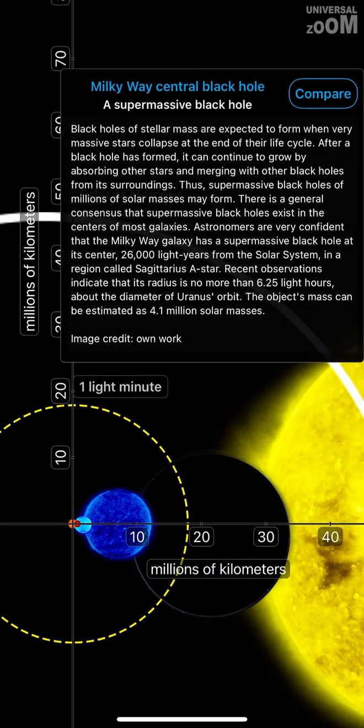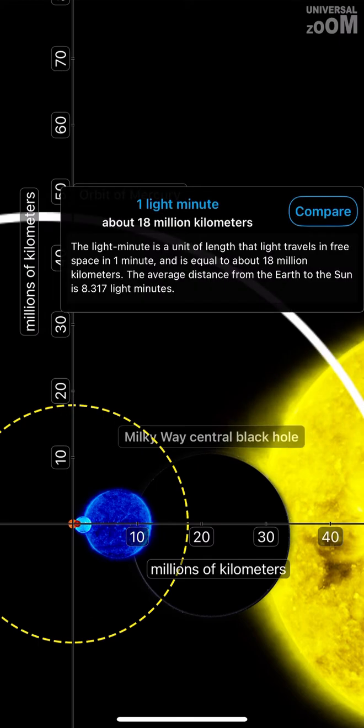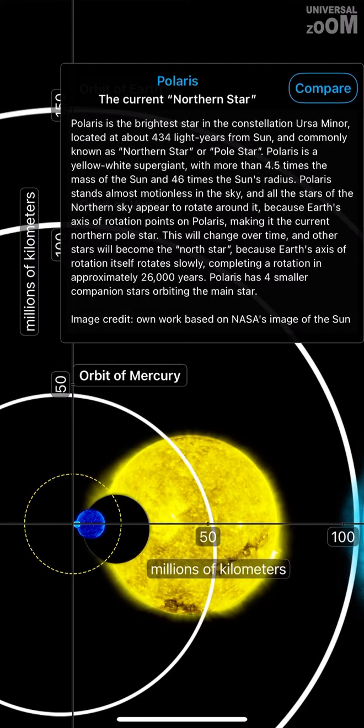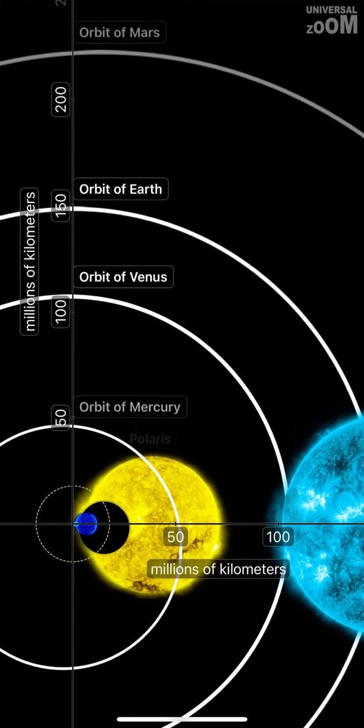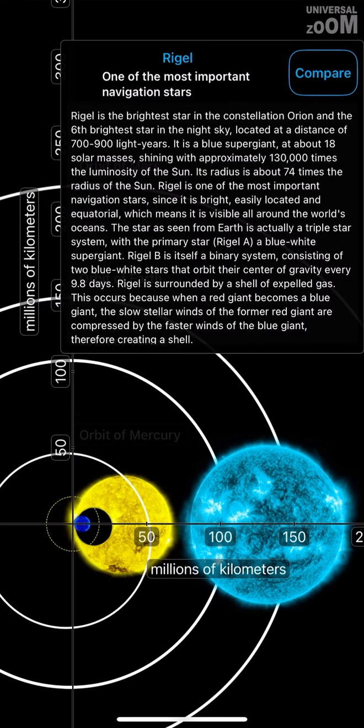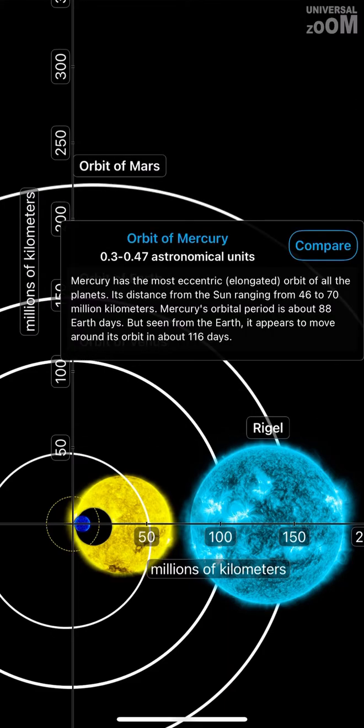Milky Way central black hole, a supermassive black hole. One light minute, about 18 million km. Polaris, the current northern star. Rigel, one of the most important navigation stars. Orbit of Mercury, 0.3 to 0.47 astronomical units.